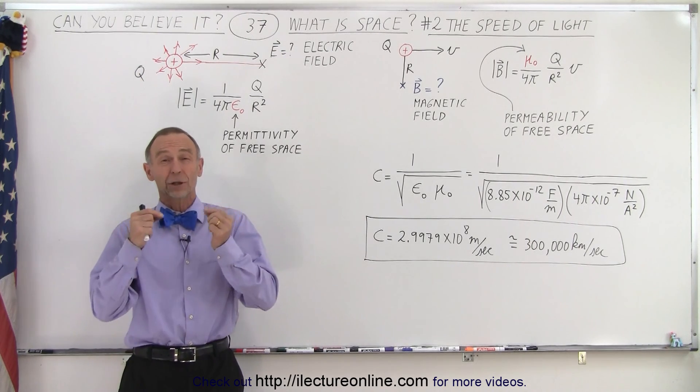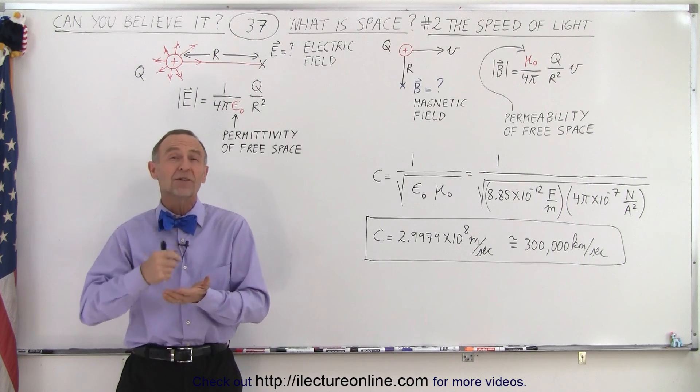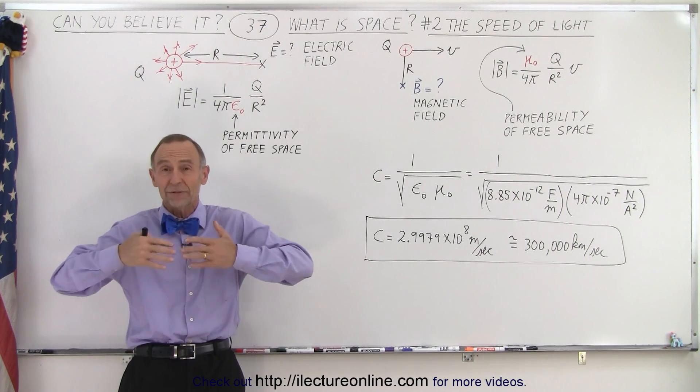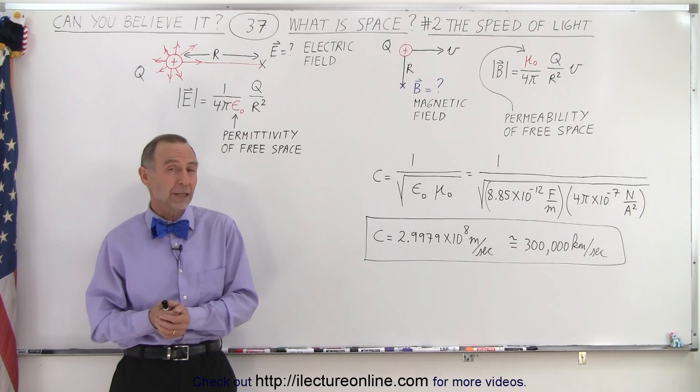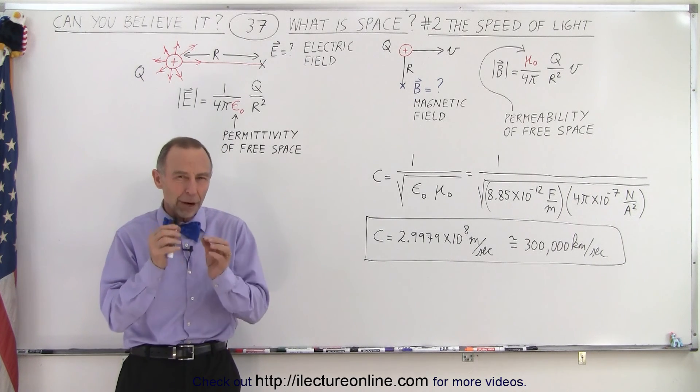Let's take a look at the speed of light in space. Why is the speed of light limited? Why can't it go faster? Why can't it go slower? Well, there's something about the properties of space that are specific to what we call the electric field and the magnetic field.